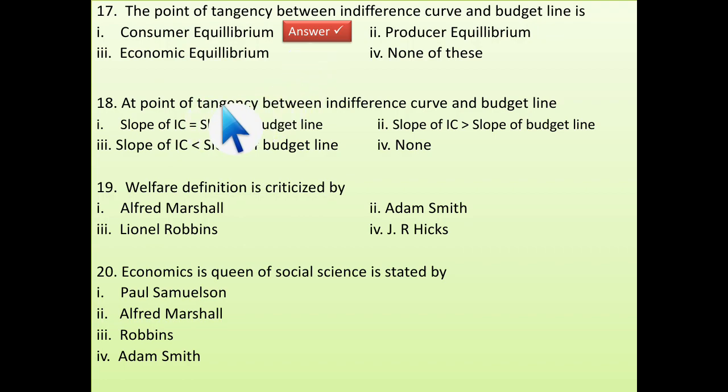Next is at point of tangency between indifference curve and budget line where we found consumer equilibrium. At that point, slope of IC and slope of budget line that should be equal. Why equal? Because I have mentioned there what happened it is greater than and what happened if it is less than. So, it should be equal.